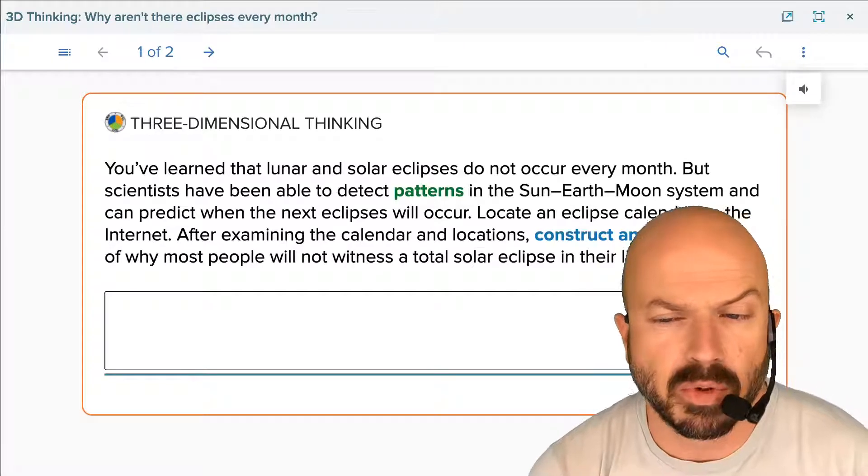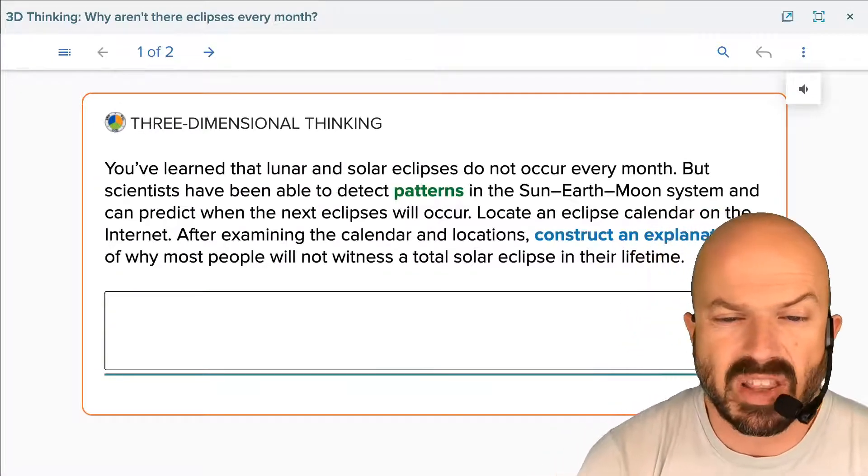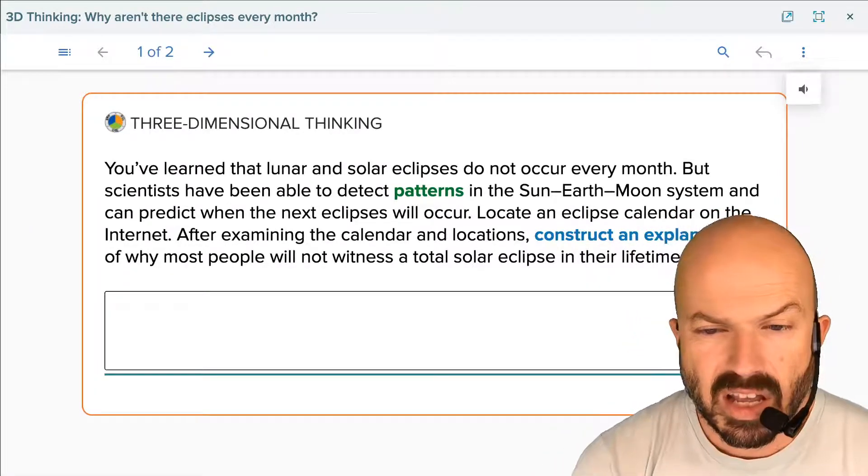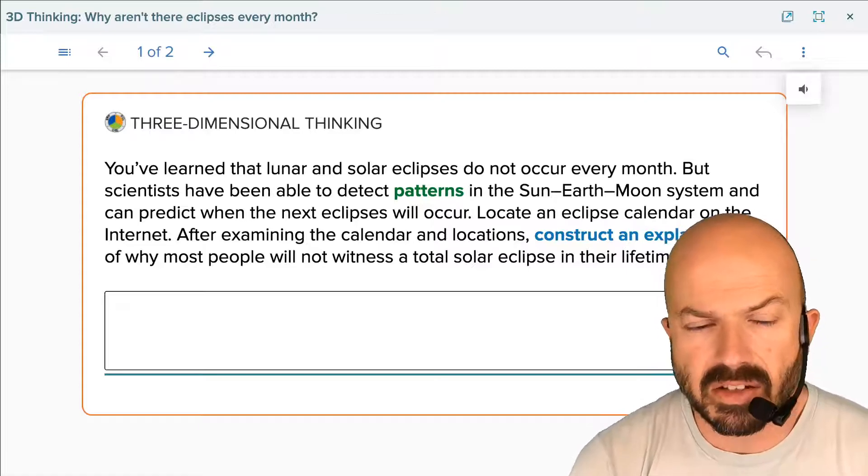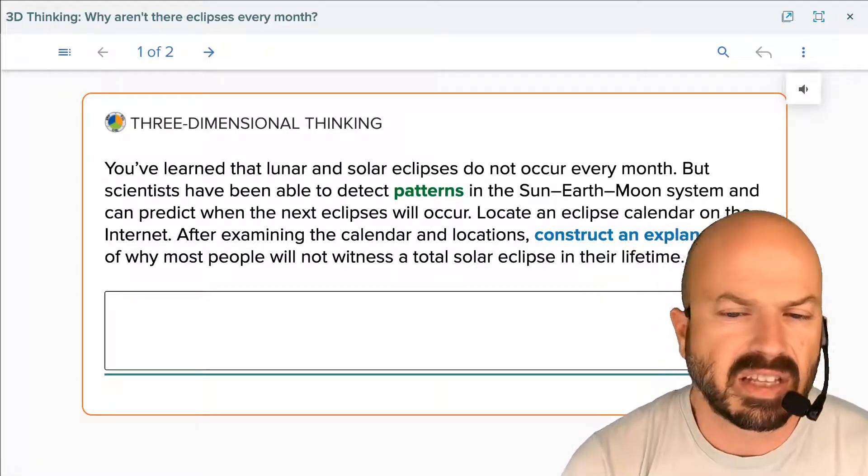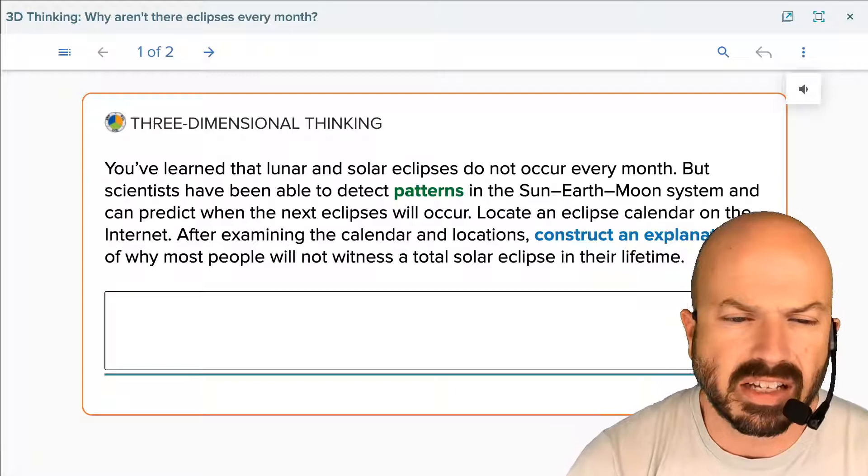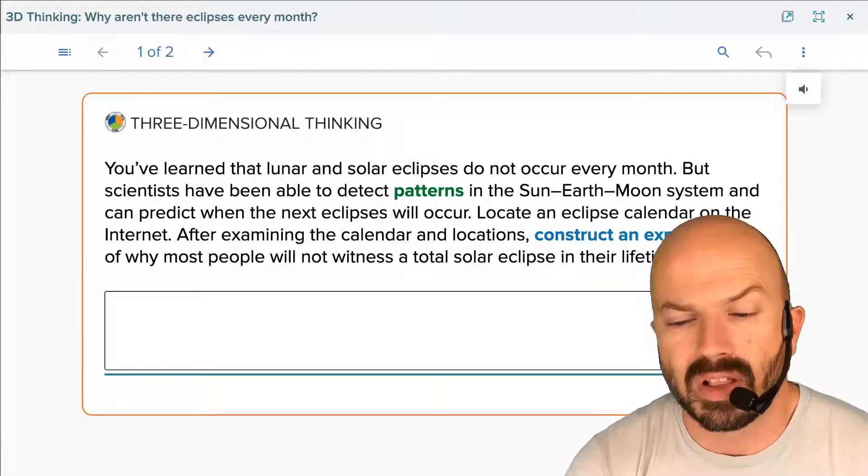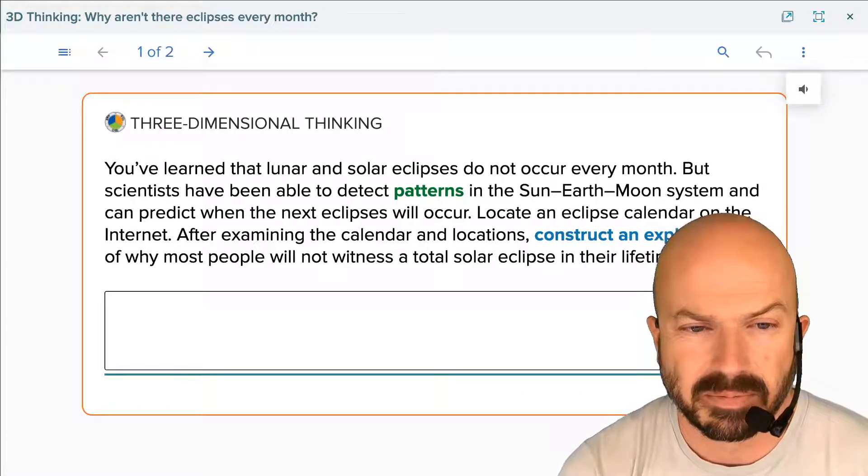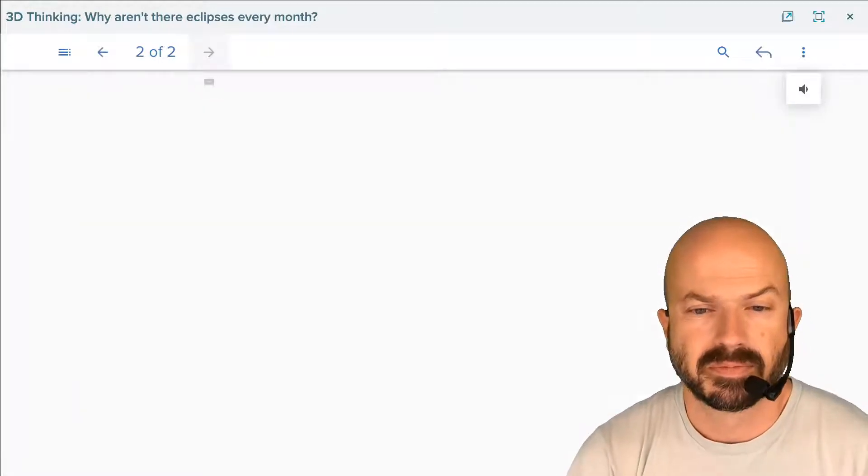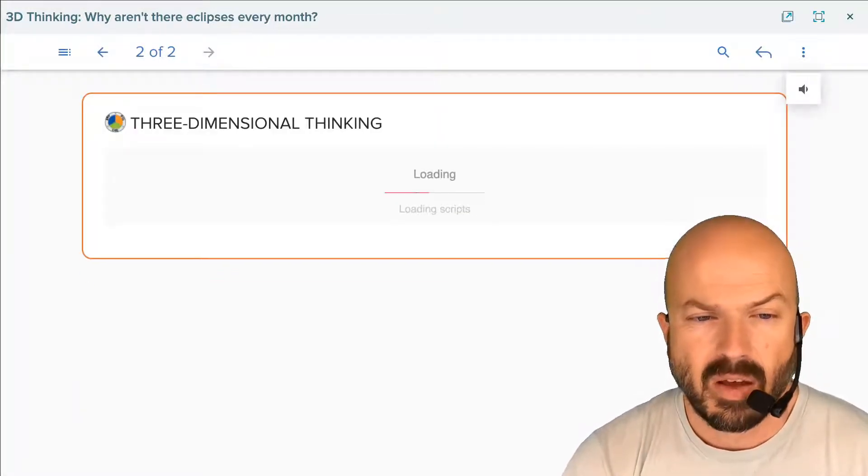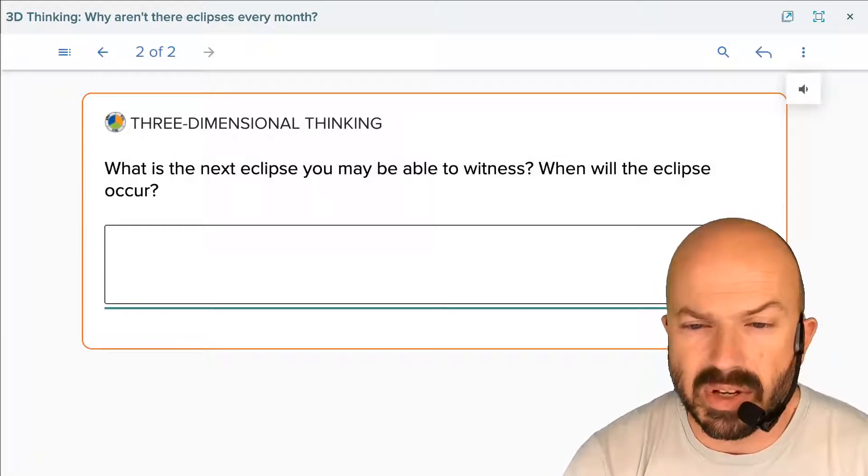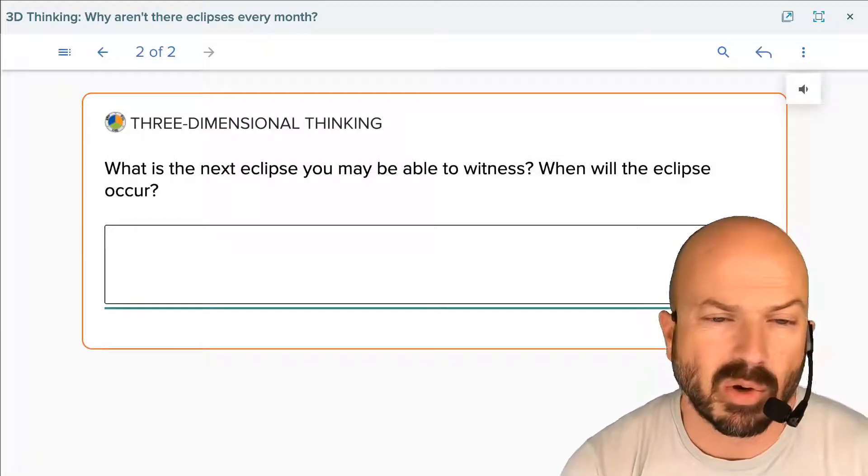You've learned that lunar and solar eclipses do not occur every month, but scientists have been able to detect patterns in the sun-earth-moon system and can predict when the next eclipses will occur. Locate an eclipse calendar on the internet. After examining the calendar and locations, construct an explanation of why most people will not witness a total solar eclipse in their lifetime. And what is the next eclipse you may be able to witness? When is that eclipse going to occur?